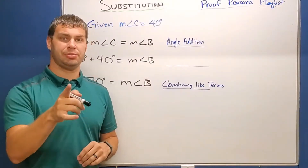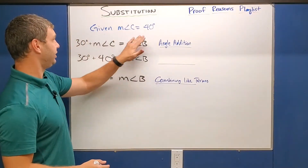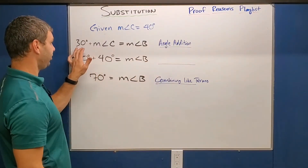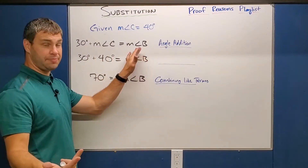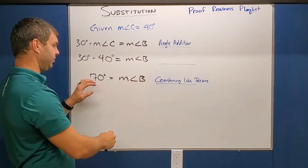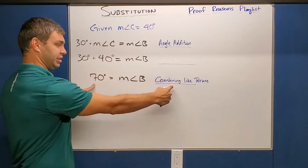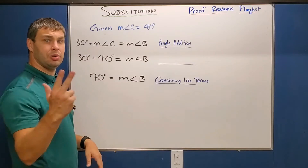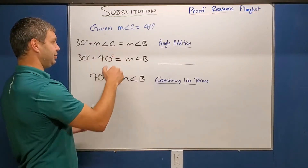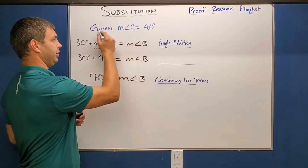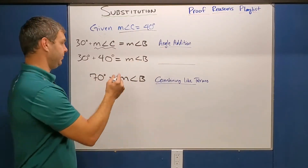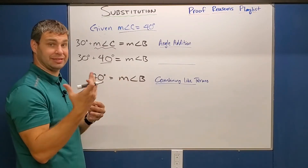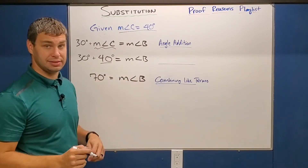Here's a really good example of substitution. We are given that the measure of angle C equals 40. Maybe by angle addition we have that 30 plus the measure of angle C equals the measure of angle B. Then we write 30 plus 40 equals the measure of angle B. What happened is they replaced the measure of angle C with 40, as given. When you replace something with the same value, that is substitution.